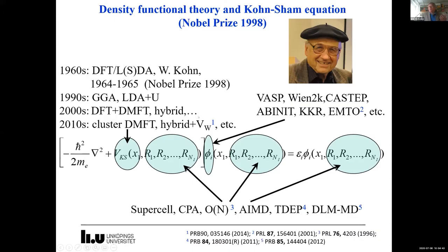I want to underline that density functional theory is a constantly developing, living theory that always improves its basic approximation, especially in terms of the exchange-correlation potential. The previous speaker focused on the SCAN functional; there are also approximations like dynamical mean field theory, LDA+U, and hybrid functionals, which allow us to produce data with higher and higher accuracy. But today I focus on structural complexity — how the theory deals with many atoms.